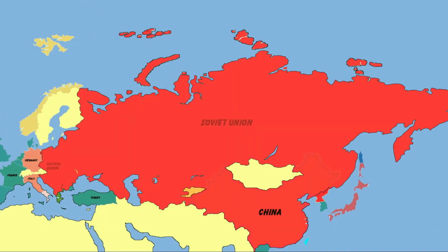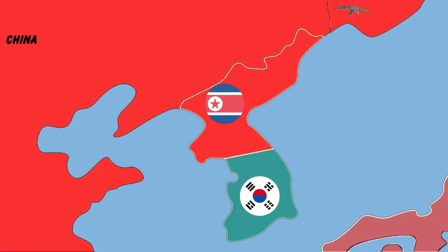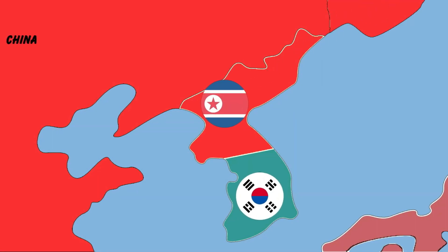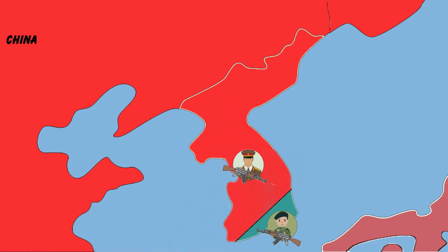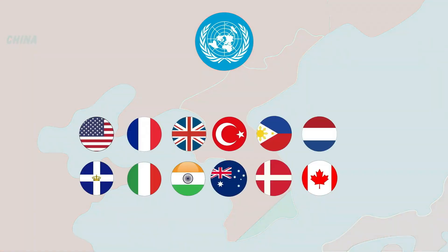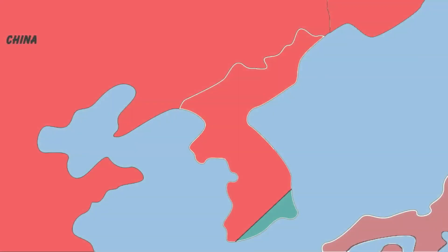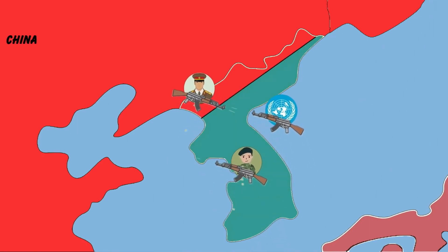The victory of the Communist Party of China made the socialist system connected from Europe to Asia. Politically victorious, the Soviet Union provided aid to North Korea to advance to the south. The North Korean army attacked, pushing the South Korean army almost to the end. The United Nations quickly established an emergency force with troops from 16 countries to intervene in the war.